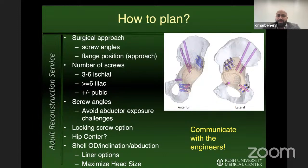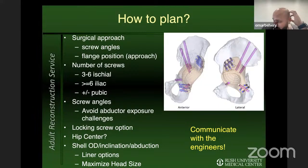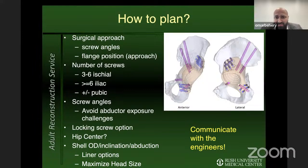The number of screws is a key consideration: at least three ischial screws, preferably six if you have the bone stock; at least six on the iliac side, sometimes more for larger segmental bone loss. A pubic screw, if bone stock allows, definitely helps biomechanically when you have tri-radiated fixation between the ischium, pubis, and ilium.